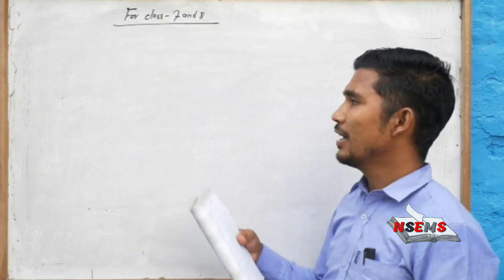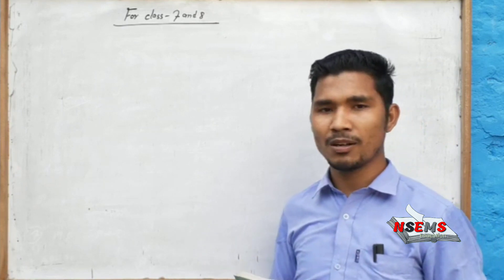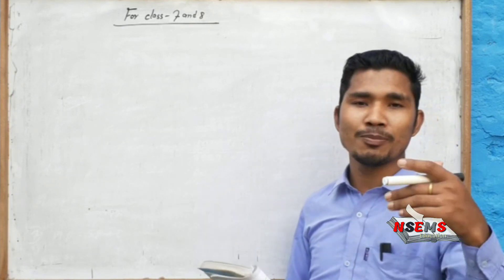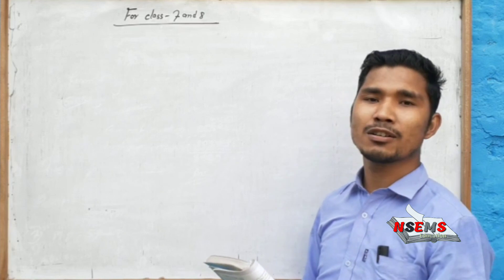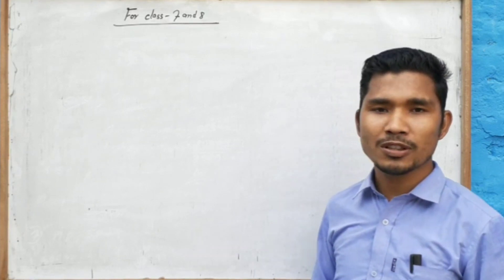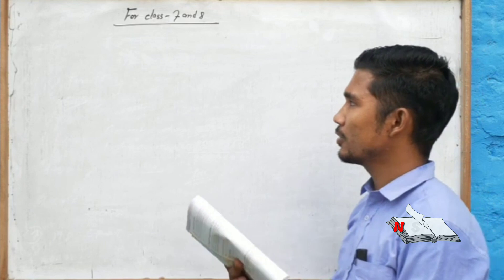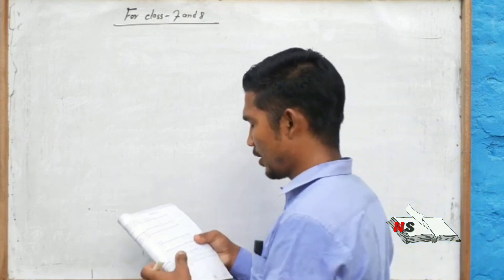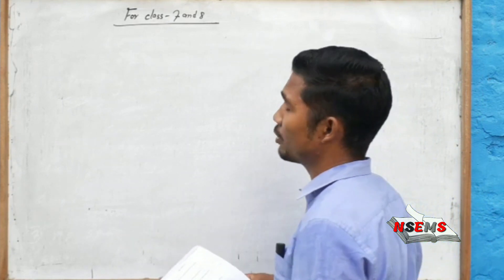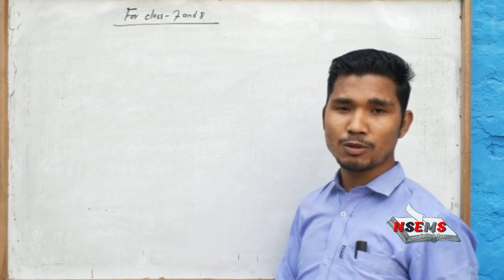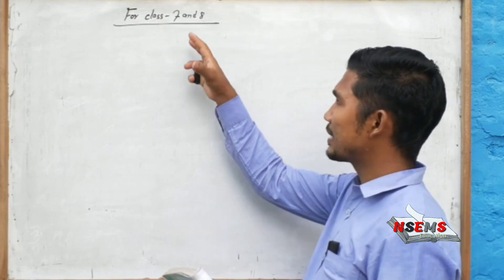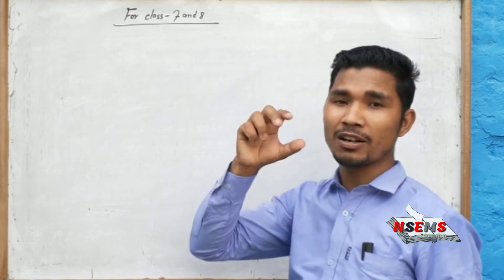So we are going to use our pen and copy. We are going to take a book for class 8 because we are going to cover the binary number system. I will be in the first class of 7 to 8.